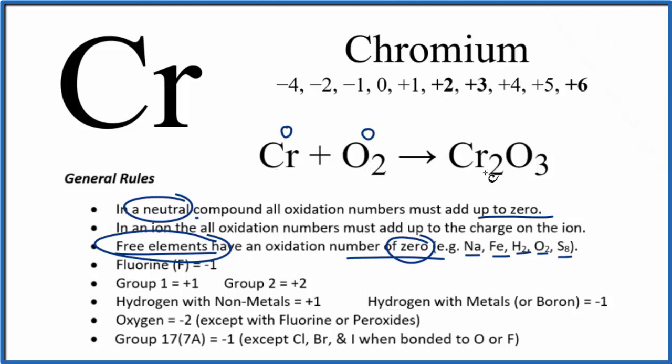Now we have to use these rules to figure out the oxidation number on the chromium. Oxygen is always going to be minus two with just a few exceptions, minus two. So this is going to be three times minus two, that's minus six.